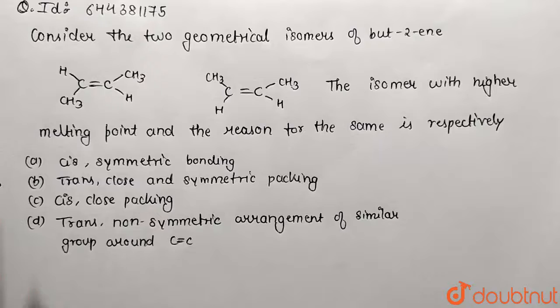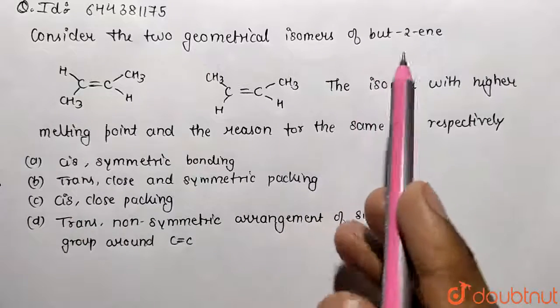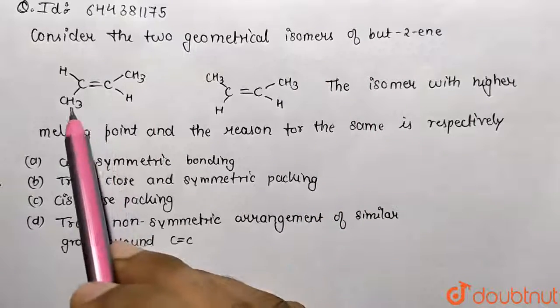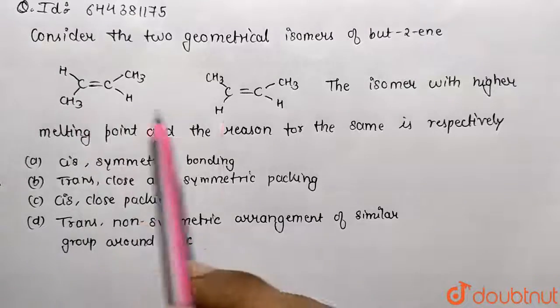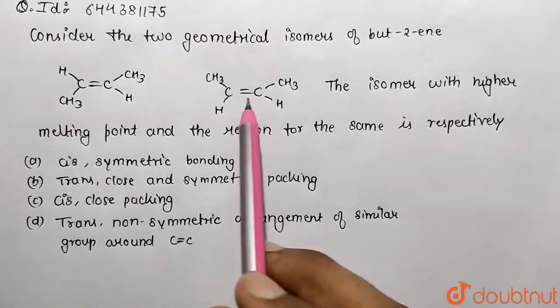We need to answer: consider the two geometrical isomers of but-2-ene molecule. So this is the trans form where methyl groups are exactly opposite and over here this is the adjacent form, so this is called as the cis one.